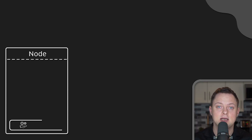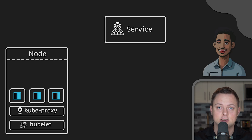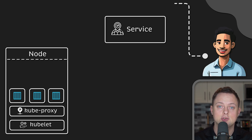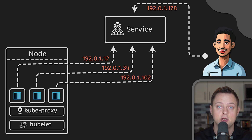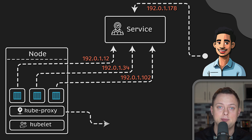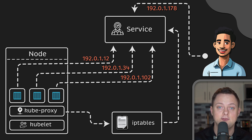Next is kube-proxy. It is a network proxy that also runs on every single node. You are probably aware that to expose applications inside the cluster to the internet, we use service Kubernetes objects — kube-proxy actually implements that functionality. It maintains network rules on nodes, allowing network communications to your pods from network sessions inside or outside your cluster. kube-proxy uses the operating system packet filtering layer if available, such as IP tables; otherwise, kube-proxy forwards the traffic itself.